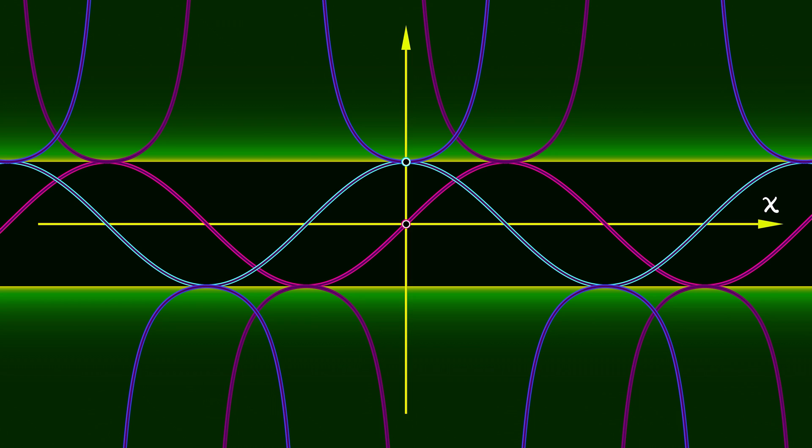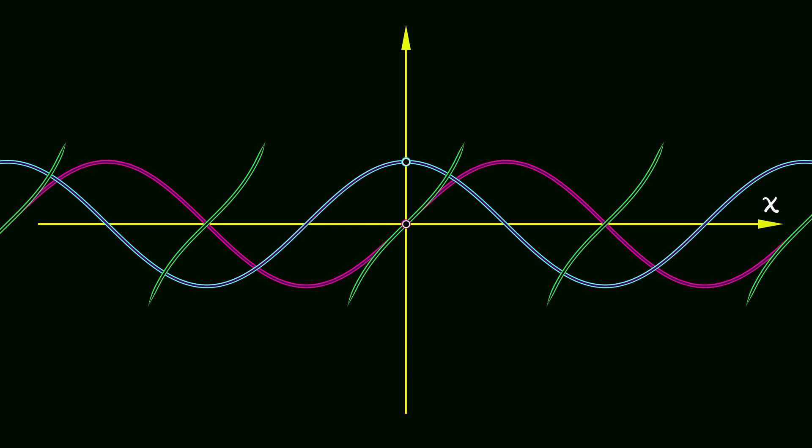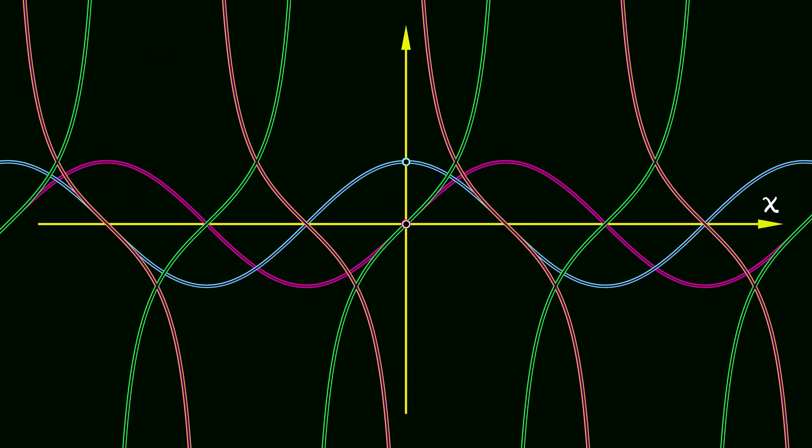They're a little bit more dangerous to work with. If you take the ratios of these, sine over cosine, you get tangent. The reciprocal of that, cosine over sine, you get cotangent.